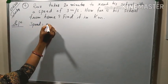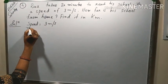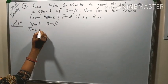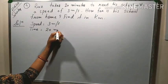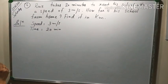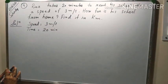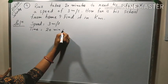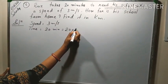Time is given 20 minutes. As speed is in meter per second so time needs to be changed into second. So, it will be 20 into 60.